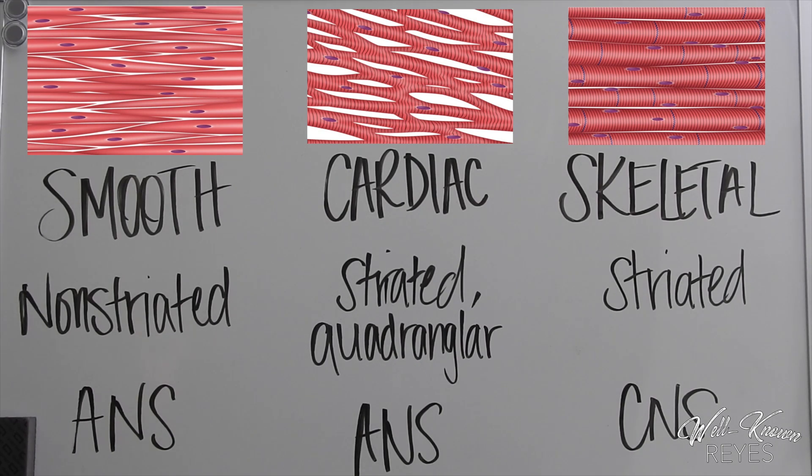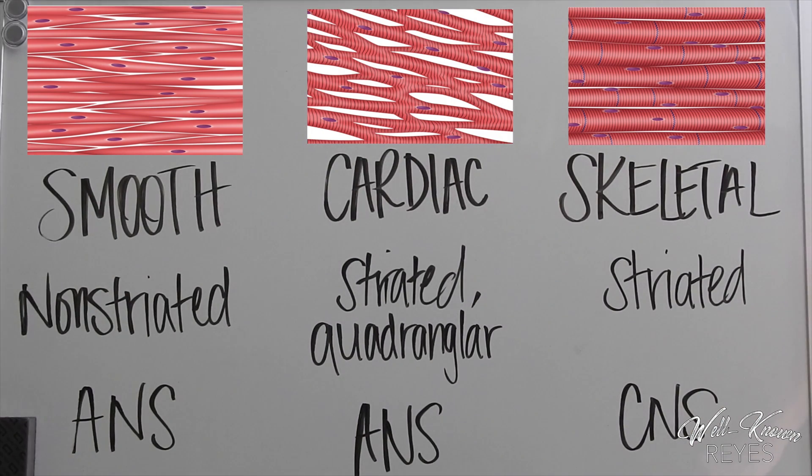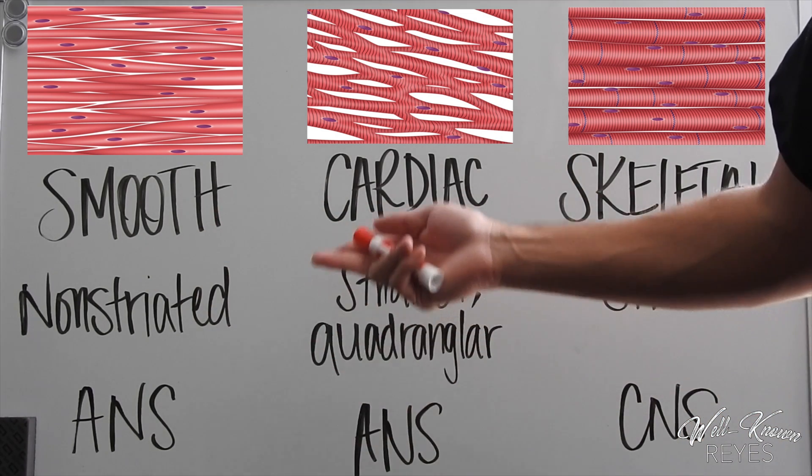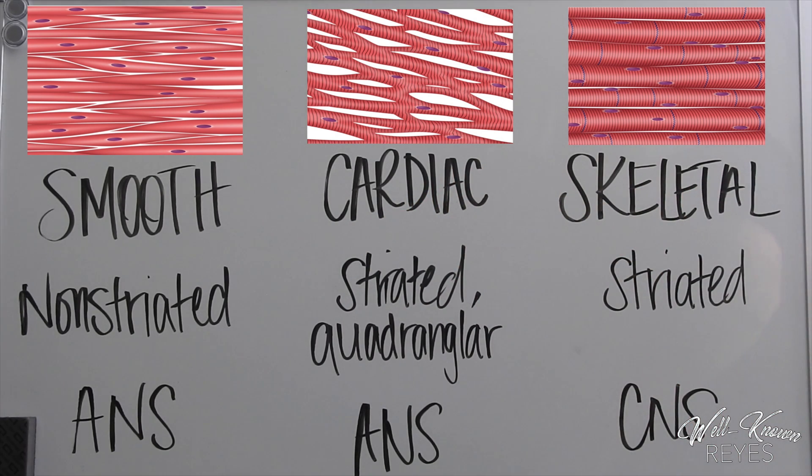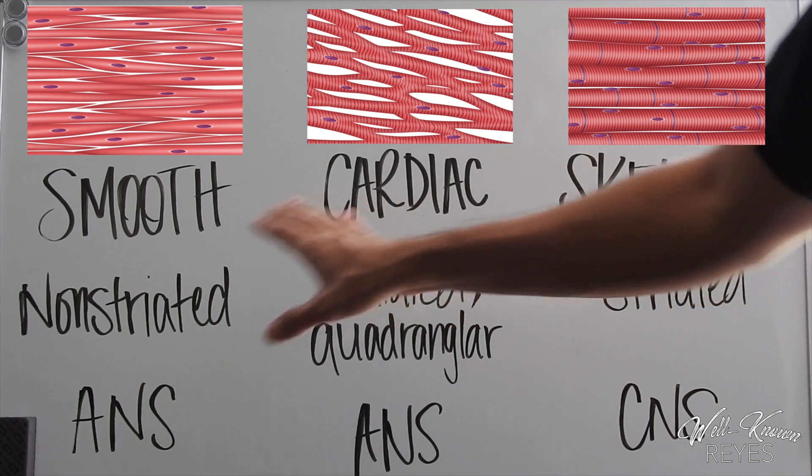Alright, let's get started. We're going to cover the three different types of muscle tissues found in our body: smooth muscle tissue, cardiac muscle tissue, and skeletal muscle tissue. It's important that we understand the difference between all three of these before we take the IMBLEX.